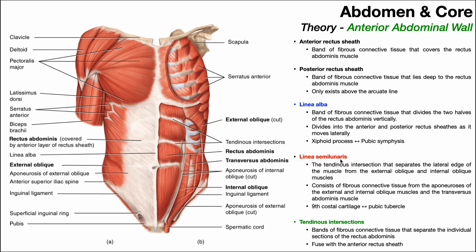Next, we have the linea semilunaris, or the semilunar line. The semilunar line is a tendinous intersection — not to be confused with the specific term tendinous intersection — that separates the lateral edge of the rectus abdominis muscle from the external oblique and internal oblique muscles. The semilunar line consists of fibrous connective tissue from the aponeurosis of all three major core muscles: the external oblique, internal oblique, and the transversus abdominis. It extends from the ninth costal cartilage all the way down to the pubic tubercle.